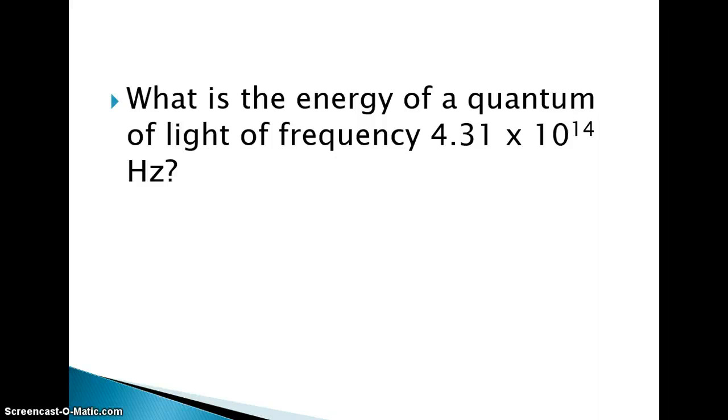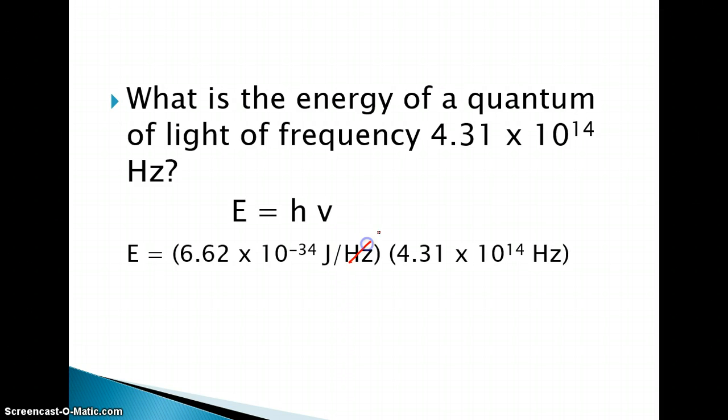So let's try this type of problem. It says, what is the energy of a quantum of light of frequency 4.31 times 10 to the 14th hertz? Well, we have our equation. Energy is equal to Planck's constant times the frequency, and energy is what we're looking for. So all we're going to do is substitute in Planck's constant, 6.62 times 10 to the negative 34 joule hertz, and multiply it by that frequency, 4.31 times 10 to the 14 hertz. You notice our hertz will cancel out, and energy will be equal to 2.86 times 10 to the 19th joules.